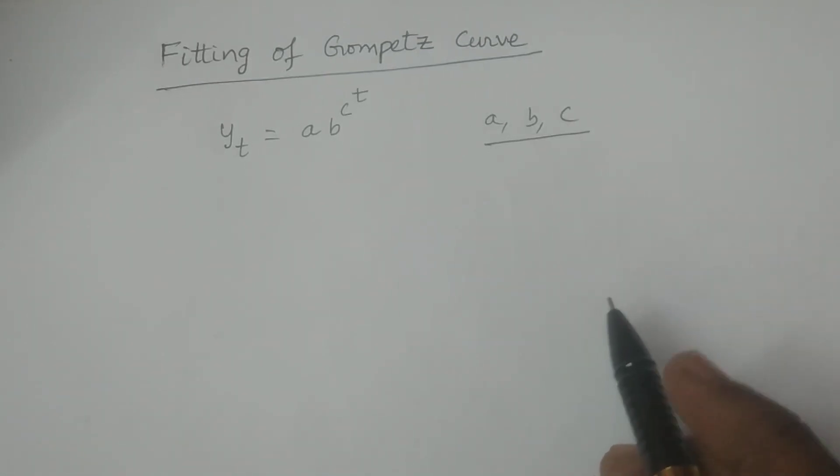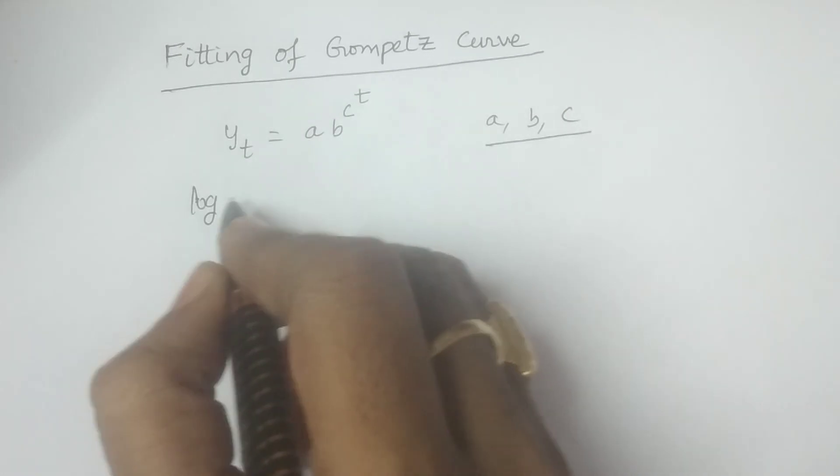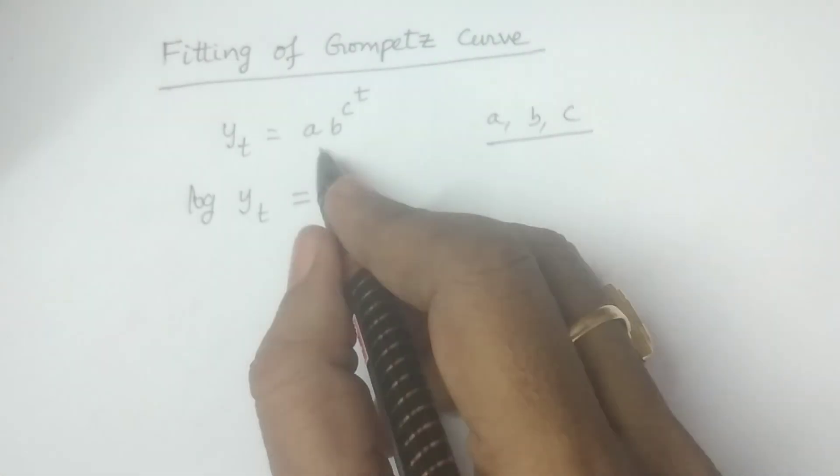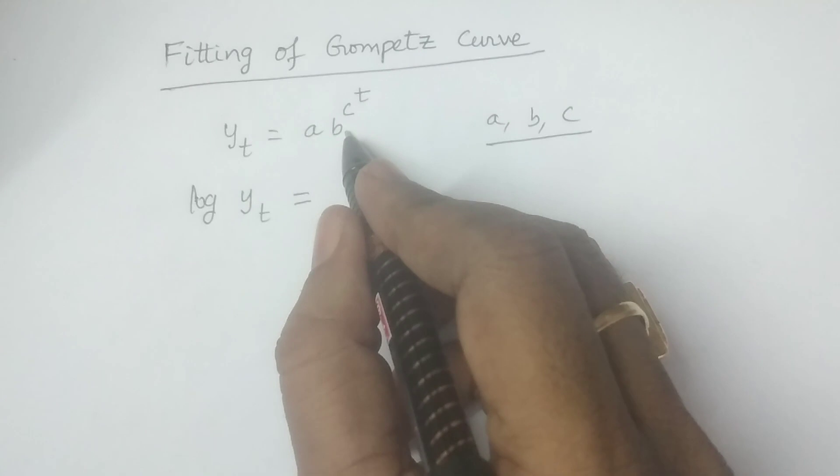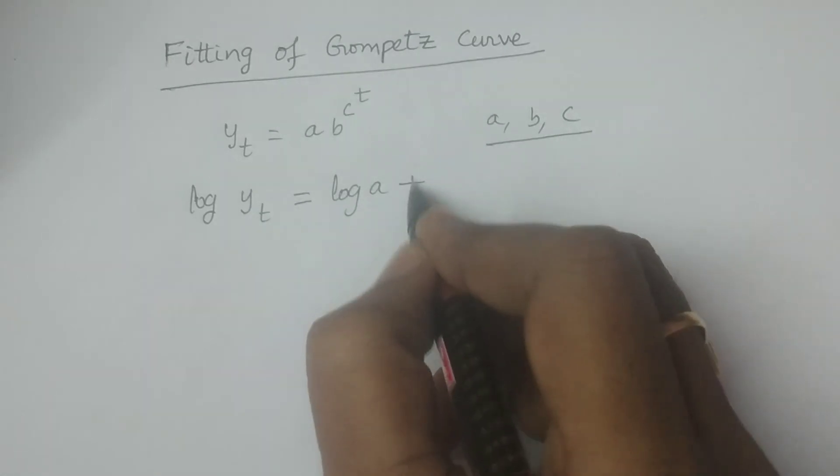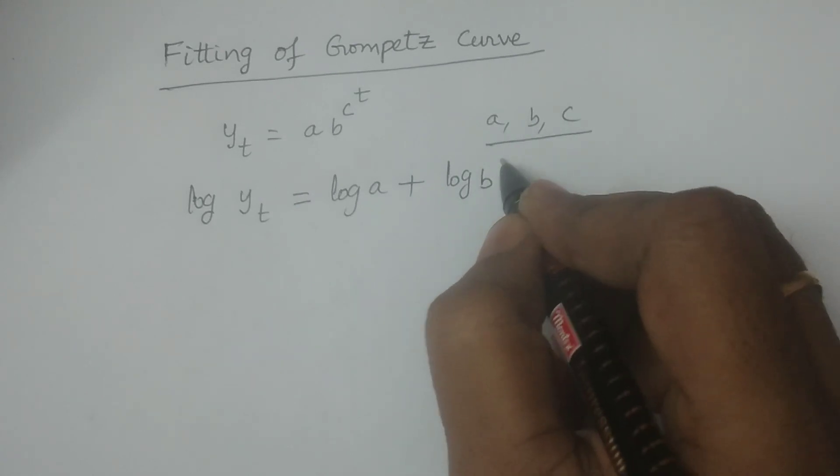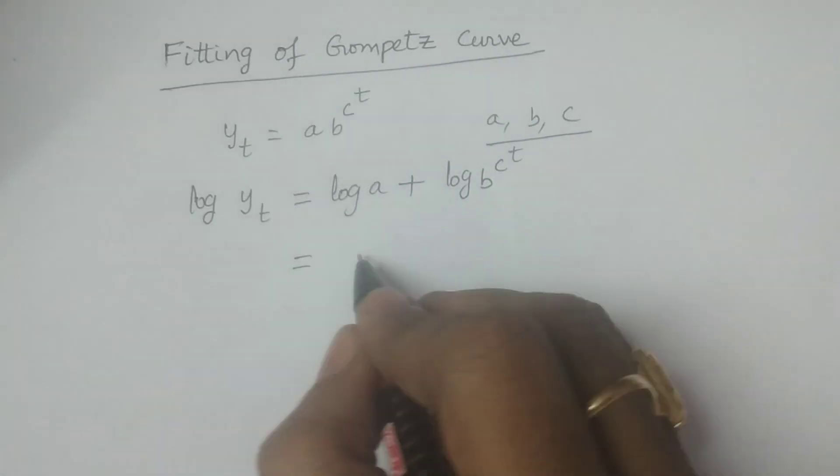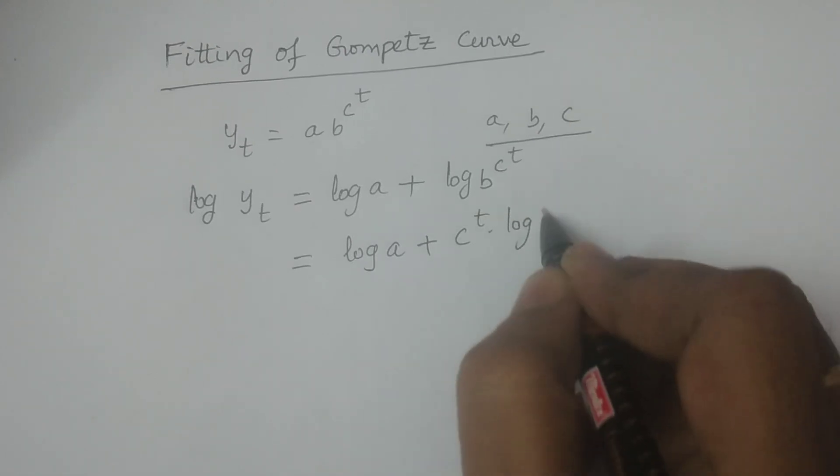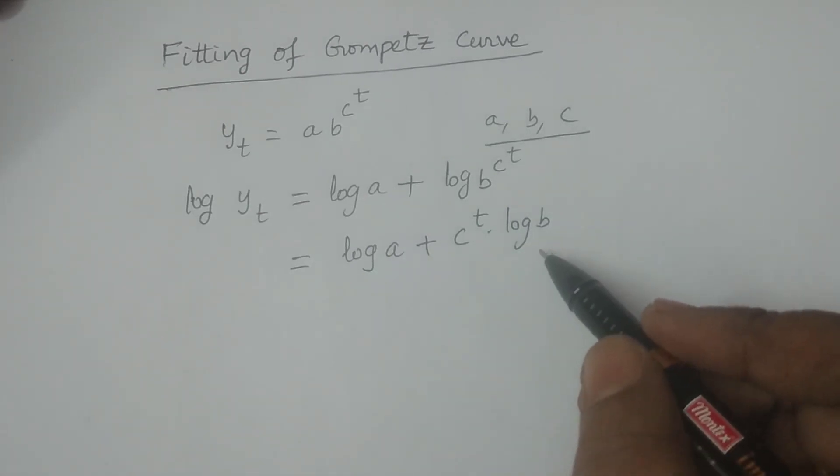But how? First of all, we have to consider logarithms for this. To calculate or to fit a Gompertz curve, the procedure is you have to consider logarithms. Log y_t equals log a plus log b to the power c^t, which equals log a plus c^t into log b. It is just like log x^m equals m into log x, so c^t into log b.